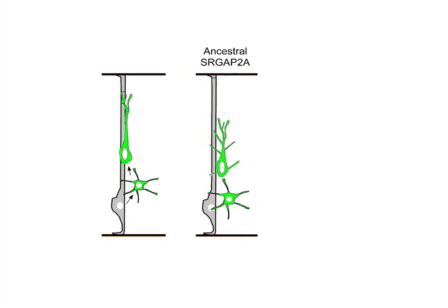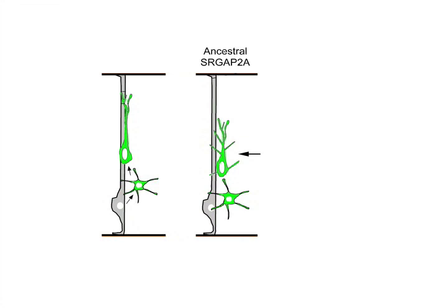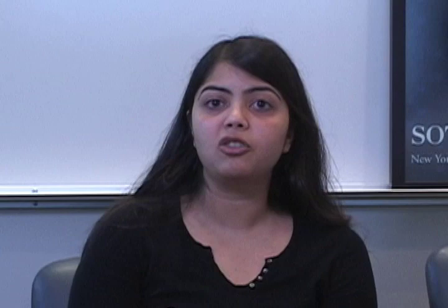One of the functions of the ancestral SRGAP2 gene is to make protrusions of the cell membrane called filopodia, and this activity is known to slow down the migration of newborn neurons in the cortex by causing their neurites to branch excessively. We found, using both in vitro and in vivo approaches, that the human-specific protein SRGAP2C acts as a negative modulator of the ancestral protein during this process. On account of its truncated nature, the human-specific protein can still bind to the ancestral protein, but it inhibits its function during migration. Inhibition of the ancestral SRGAP2 by its human-specific copy allows these migrating neurons to reach their destination faster, which may be advantageous in the context of the developing human brain, where the total distance of migration is greatly increased compared to other mammals.